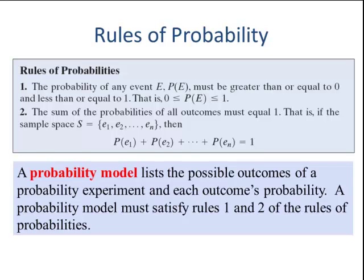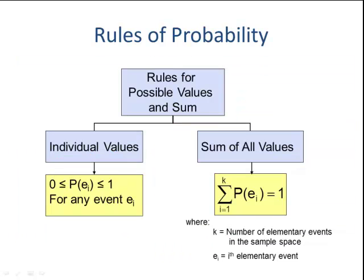A probability model lists the possible outcomes of a probability experiment and each outcome's probability. A probability model must satisfy both rules of probability. Here's the flowchart: individual values must be between zero and one (inclusive), and the sum of all the probabilities must equal one.